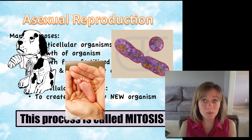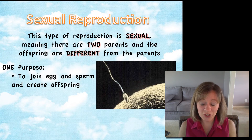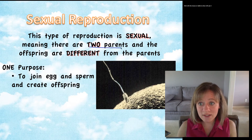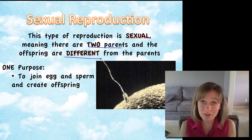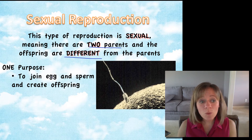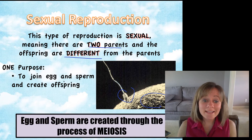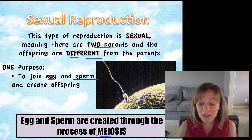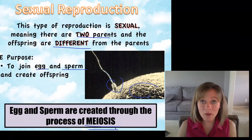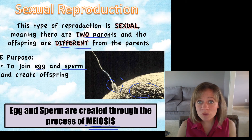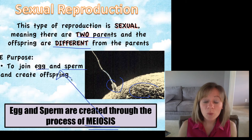Let's compare asexual reproduction to sexual reproduction. In sexual reproduction, there are two parents and the offspring are different — there's a mixing up of genetic information because there are two different parents, so the offspring are not clones. The one purpose of sexual reproduction is to join an egg and a sperm and to create offspring. These eggs and sperm are created through a process called meiosis. We're not going to talk about meiosis in this video but we will in the next. Don't confuse meiosis, which makes eggs and sperm, with mitosis.